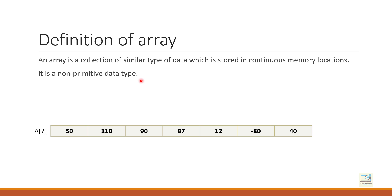Primitive means predefined data type — the type of data which is already present in the Java language and we can use it in the program. For example: int, float, char, long, double, boolean, and even string. Whereas the non-primitive data types are the ones which are derived or created using the primitive data types, so they are dependent on the primitive data type.